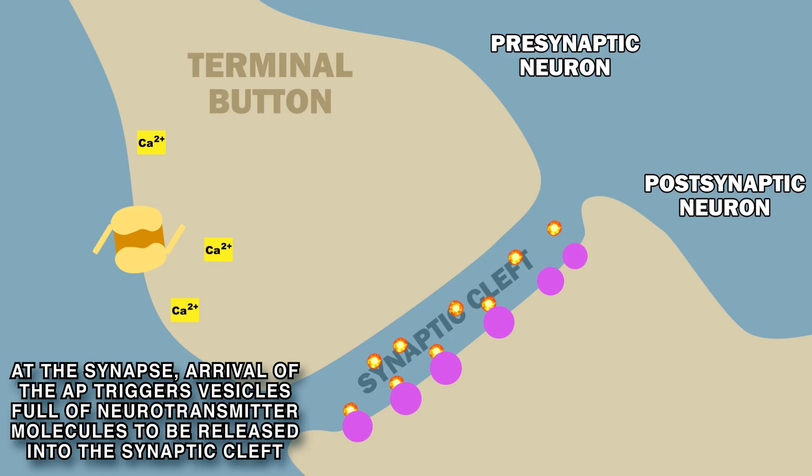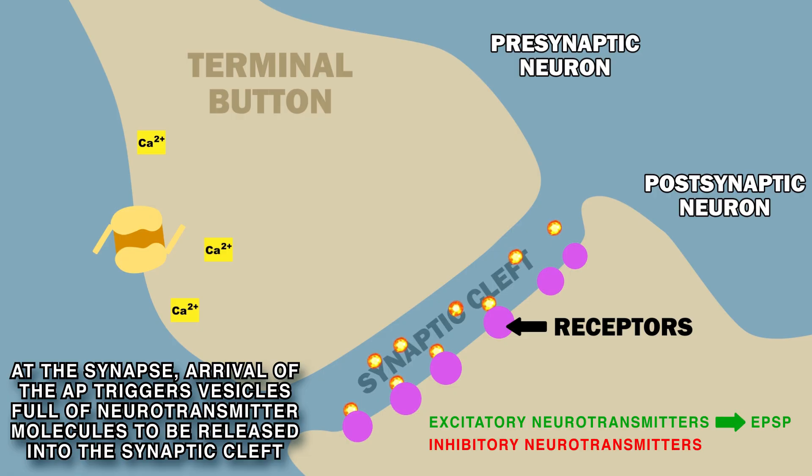After crossing the synaptic cleft, neurotransmitters attach to postsynaptic neuron receptors where they dispatch EPSPs if the neurotransmitters were excitatory, or IPSPs if the neurotransmitters were inhibitory.